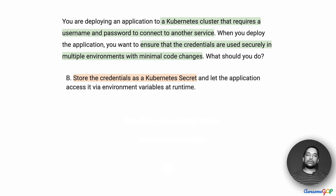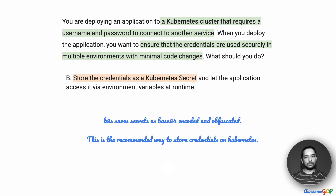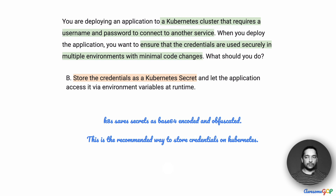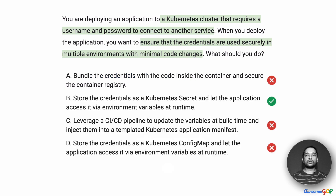Option E suggests that we store the credentials as a Kubernetes Secret and let the application access it via environment variables at runtime. This is a similar approach to Option D, except instead of a ConfigMap we are using a Secret. This is the recommended approach when working with Kubernetes. When saved as a Secret, it encodes using Base64 and is obfuscated. Therefore, anybody who has access to the production systems but does not know the credentials from elsewhere will not be able to figure out what the secrets are — in this case, the username and password. So this is the recommended way to use a Kubernetes Secret.